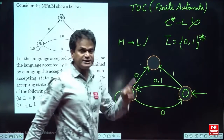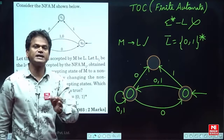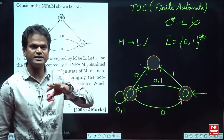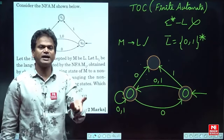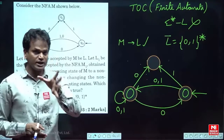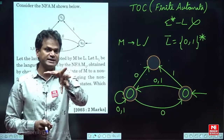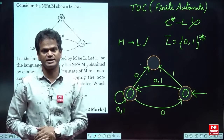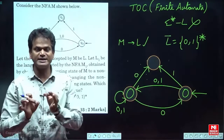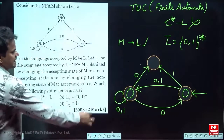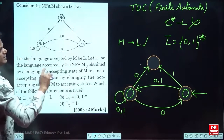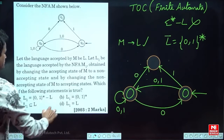So the L complement here is {0,1}* — it is not sigma star minus L. That sigma star minus L is the right answer only in the case of DFA. Whenever an NFA is given, you must just draw the interchanged diagram and identify what language it accepts. As per this, the language accepted by the new NFA is {0,1}*, which is option B.